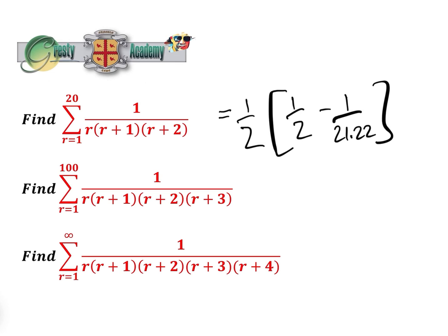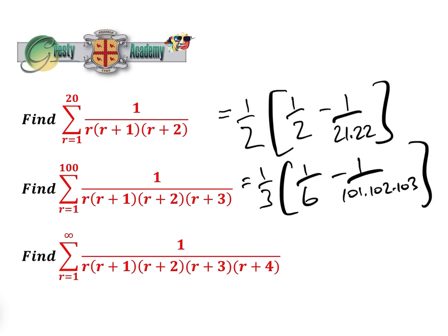Now, the sum between r equals 1 and 100 of 1 over r(r+1)(r+2)(r+3), by inspection, is 1/3 times (1/6 minus 1 over 101×102×103). And the sum between 1 and infinity of 1 over r(r+1)(r+2)(r+3)(r+4) is 1/96. Again, solved by inspection.